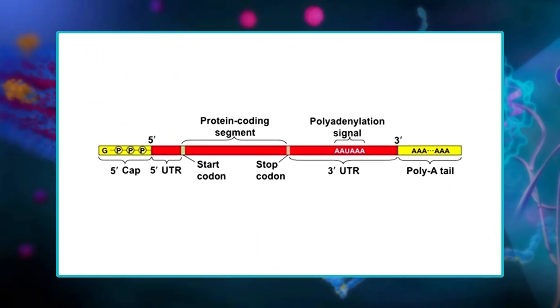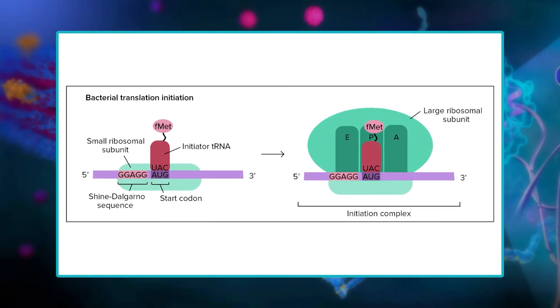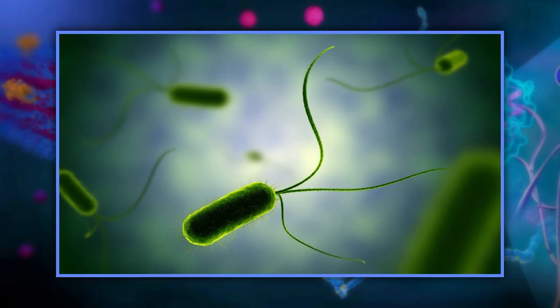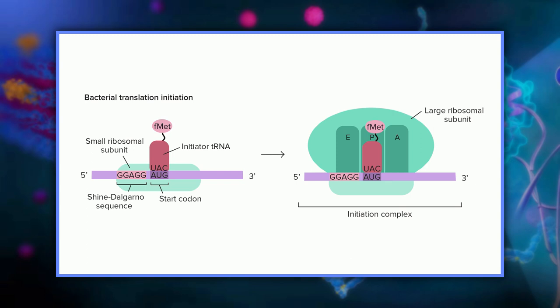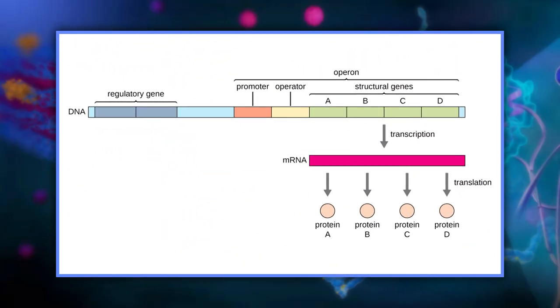Inside eukaryotic cells, translation initiation works like this: the tRNA carrying methionine attaches to the small ribosomal subunit, and together they bind to the 5' end of the mRNA by recognizing the 5' GTP cap added during nuclear processing. Then they walk along the mRNA in the 3' direction, stopping when they reach the start codon AUG, which codes for methionine. In bacteria, the small ribosomal subunit does not start at the 5' end; instead it attaches directly to certain sequences — called Shine-Dalgarno sequences — just before the start codon, which point out the ribosome binding site.